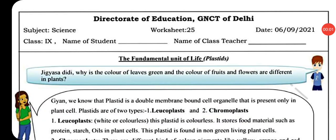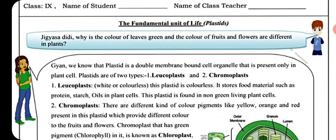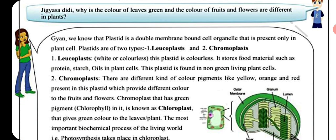Hello dear students, today we will discuss worksheet number 25, class 9th science: the fundamental unit of life — plastids. Why is the color of leaves green, and the color of fruits and flowers different in plants?